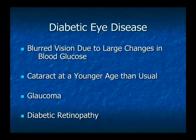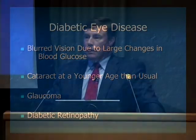A cataract is when the lens of the eye becomes cloudy. Everyone will get a cataract if they live long enough, but diabetics do tend to get a cataract at a younger age than average. Glaucoma is a disease of high eye pressure; it has to do with the fluid circulating inside the eye. Diabetics have been shown to have a higher chance of getting glaucoma, though researchers consider diabetes a risk factor rather than a direct cause.